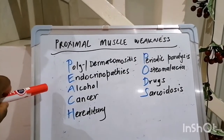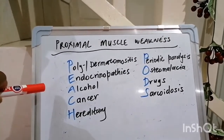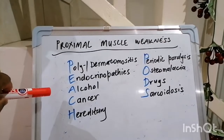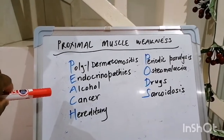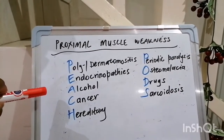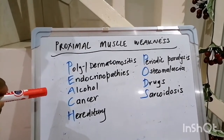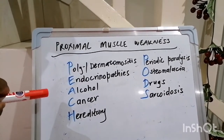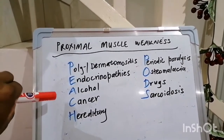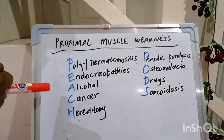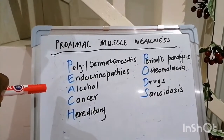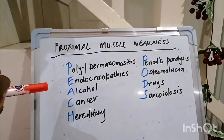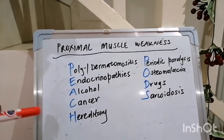Alcohol can cause it. And big clues there will be, of course, your AST to ALT ratio of greater than 2 to 1, your isolated high gamma-GT, and a macrocytic non-megaloblastic anemia on your blood form.